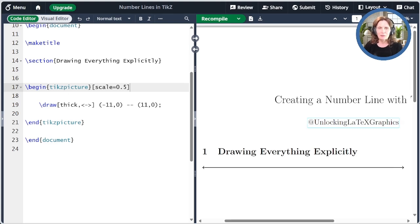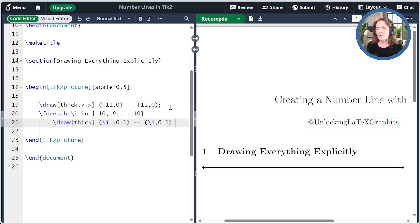Now let's add some tick marks. We can do this using a TikZ loop. I'll include a link to my episode on TikZ loops in the show notes. Here we have our loop. We're going to loop from minus 10 to 10 in intervals of 1, which it knows because I did minus 10, minus 9, dot, dot, dot, 10. And then it's drawing for each integer I from minus 0.1 to positive 0.1 in the Y direction. So we get our little tick marks here.